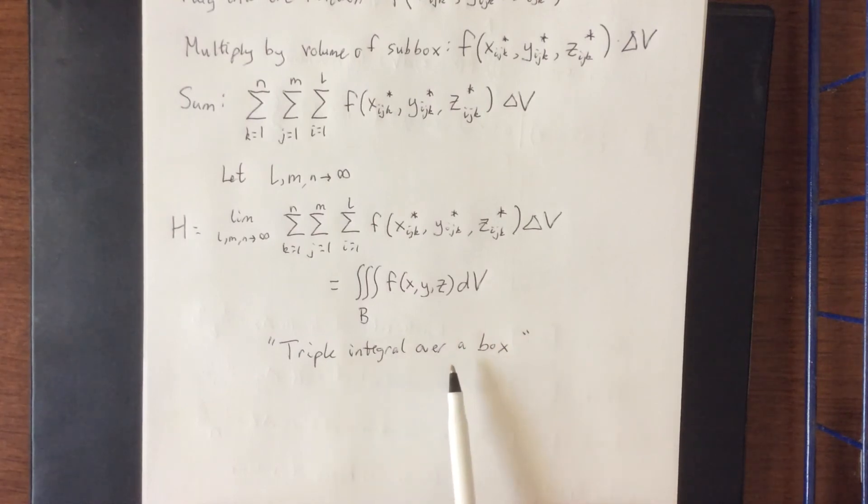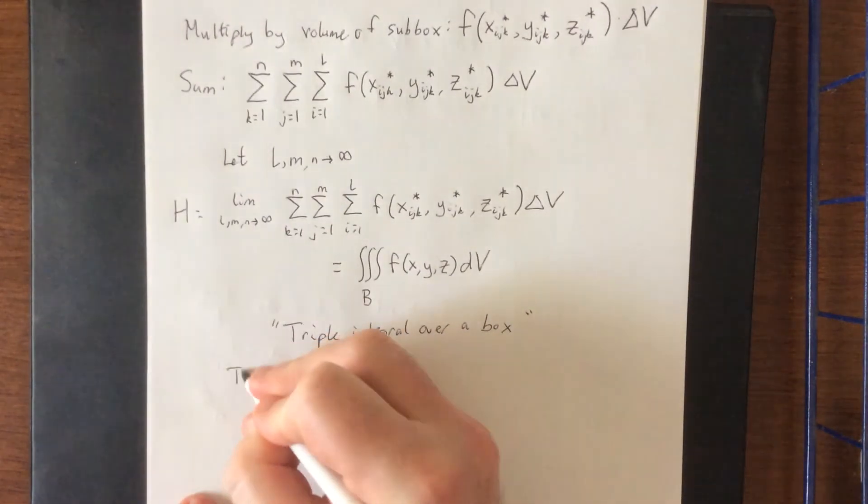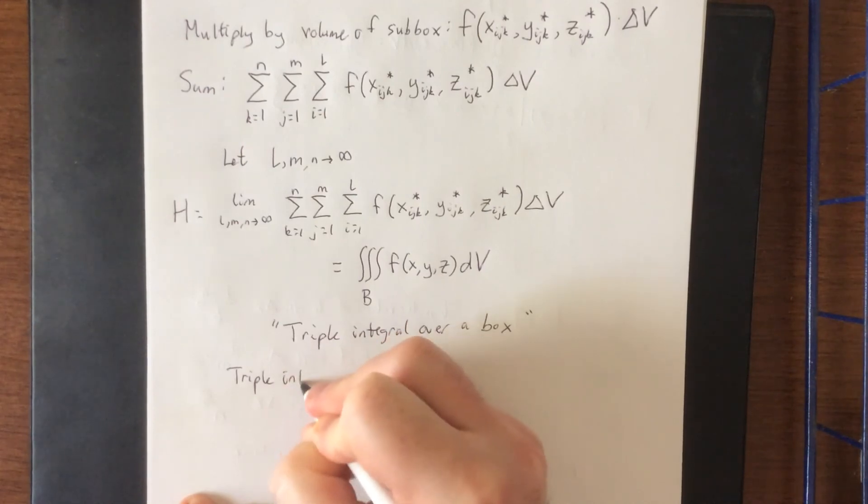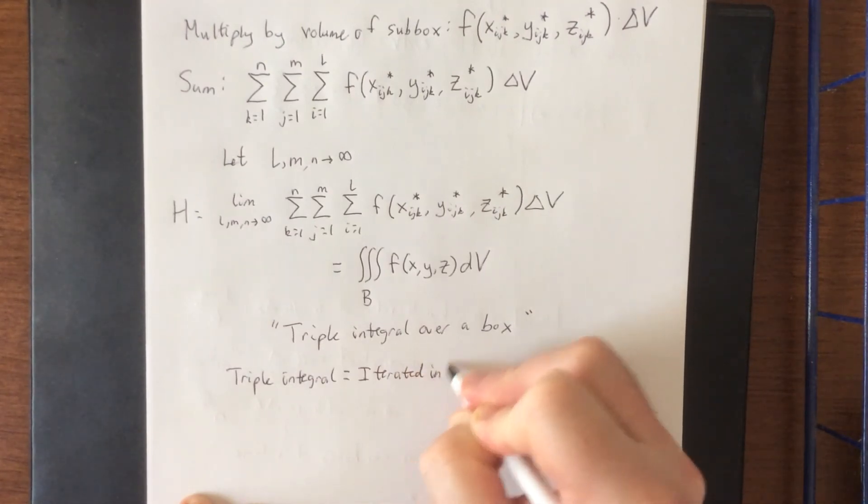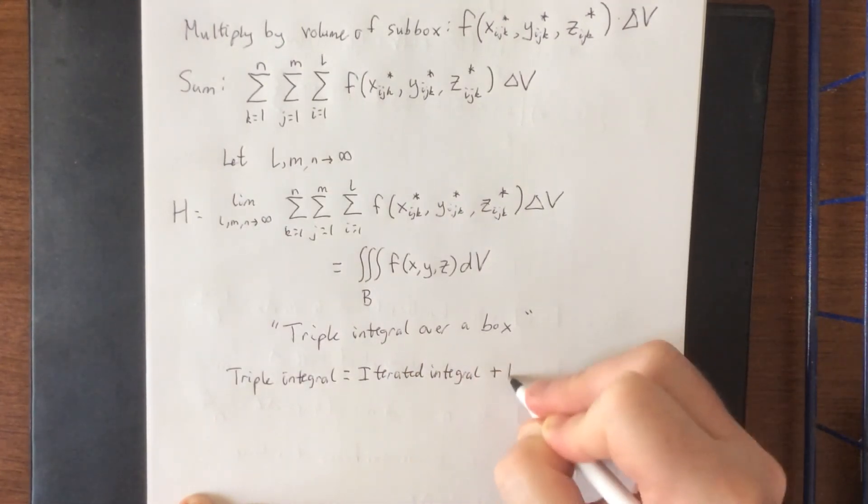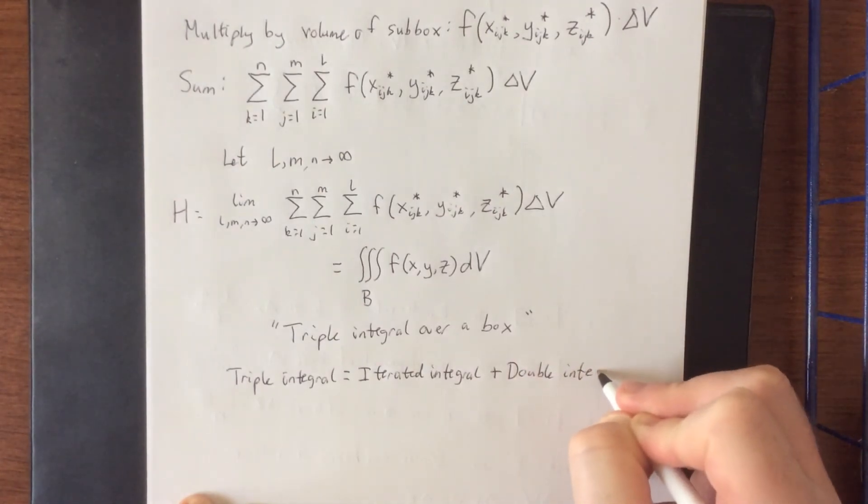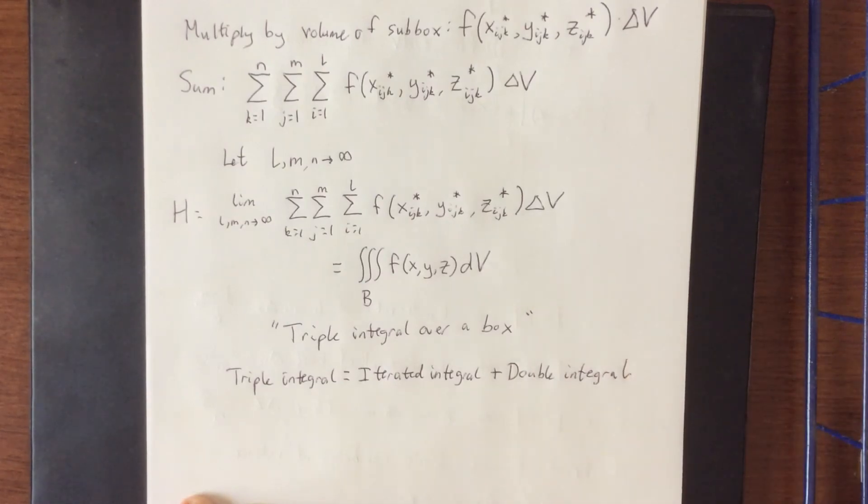Now essentially, the way that we're going to be treating a triple integral when we get to actually evaluating them is treating it as an iterated integral. We'll be integrating with respect to one variable while treating the other two as a constant, then we'll have a resulting double integral. So essentially, when it comes to evaluating these things, a triple integral is going to be an iterated integral followed by a double integral. Now a double integral, though, to be fair, was just an iterated integral followed by a definite integral. So a triple integral is just going to be an integral followed by an integral followed by an integral, and I don't think I've said anything today that has made more sense than that. A triple integral is three integrals.